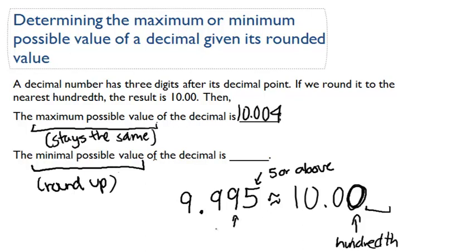If I round up, this would become 10, this would become 10, and then this would become 10. I'd get 10.00, and that's my final answer: 9.995.